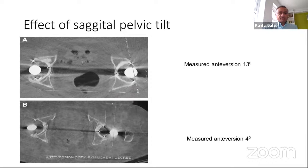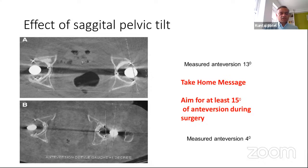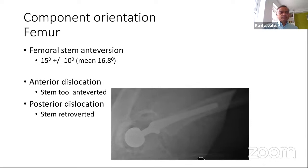We also need to bear in mind the effect of sagittal pelvic tilt. A supine CT scan may measure anteversion of around 13-14 degrees, but a CT scan in standing position shows only around 4 degrees of anteversion. With pelvic tilt when you stand up, anteversion decreases substantially. The take-home message is to aim for at least 15 degrees of anteversion during surgery, as it's done in the supine or lateral position. For the femoral stem, aim for 10-15 degrees of anteversion, or remain parallel to the neck. The most important factor is combined anteversion between cup and stem, which we generally aim for around 25-30 degrees.